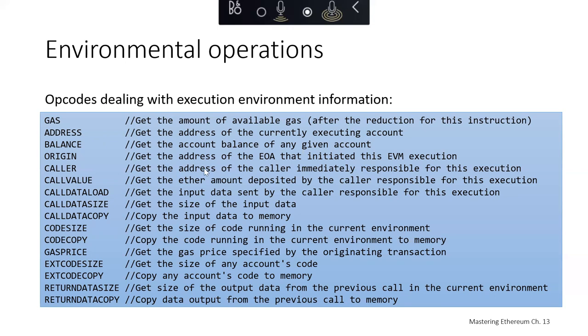This could give you an intermediate caller if there was an original caller and then they called somebody and then somebody else called this. CALLVALUE will tell you how much ether was deposited by the caller. CALLDATALOAD will give you the data that was sent in. CALLDATASIZE will tell you the size of the data that was sent in. Copy the data to memory. We can get the size of the code running in the current environment, copy the code running in the current environment to memory, get the gas price specified by the original transaction, get the size of any account's particular code, copy any account's code to memory, get the size of the output data from the previous call, and copy data output from the previous call to memory.